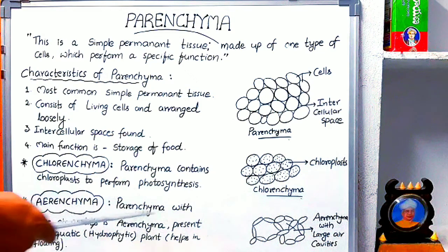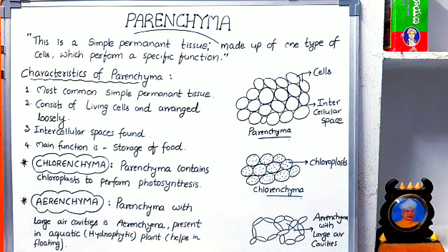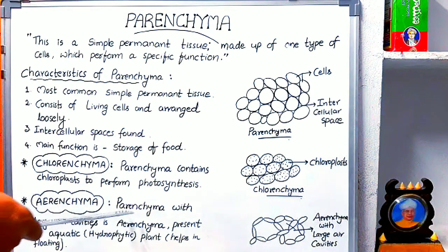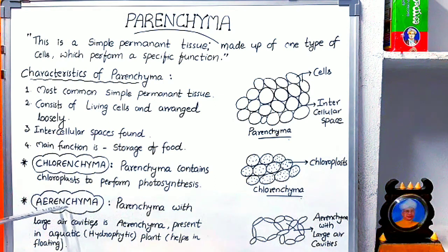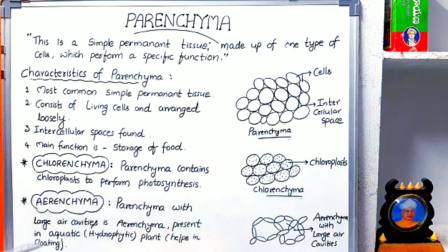Next is aerenchyma. Aerenchyma means parenchyma with large air cavities. Whenever the air cavities are very large, that parenchyma is called aerenchyma. This aerenchyma is present in aquatic plants, also called hydrophytic plants.